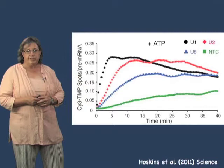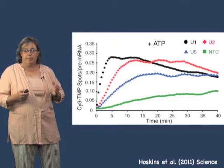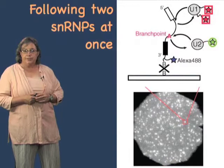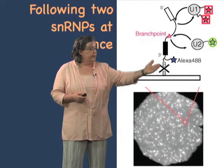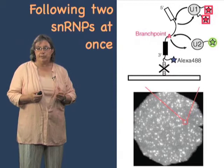This apparent order is consistent with ordered assembly, but it doesn't actually tell us that for any one molecule the spliceosome assembly was ordered. We can test that directly with our single molecule methods by following two SNRPs at once. So now we're going to do three-color experiments: one color on the pre-mRNA, one color on U2 SNRP, and another color on U1. By watching these SNRPs simultaneously, we can see whether U1 comes first or U2 comes first.